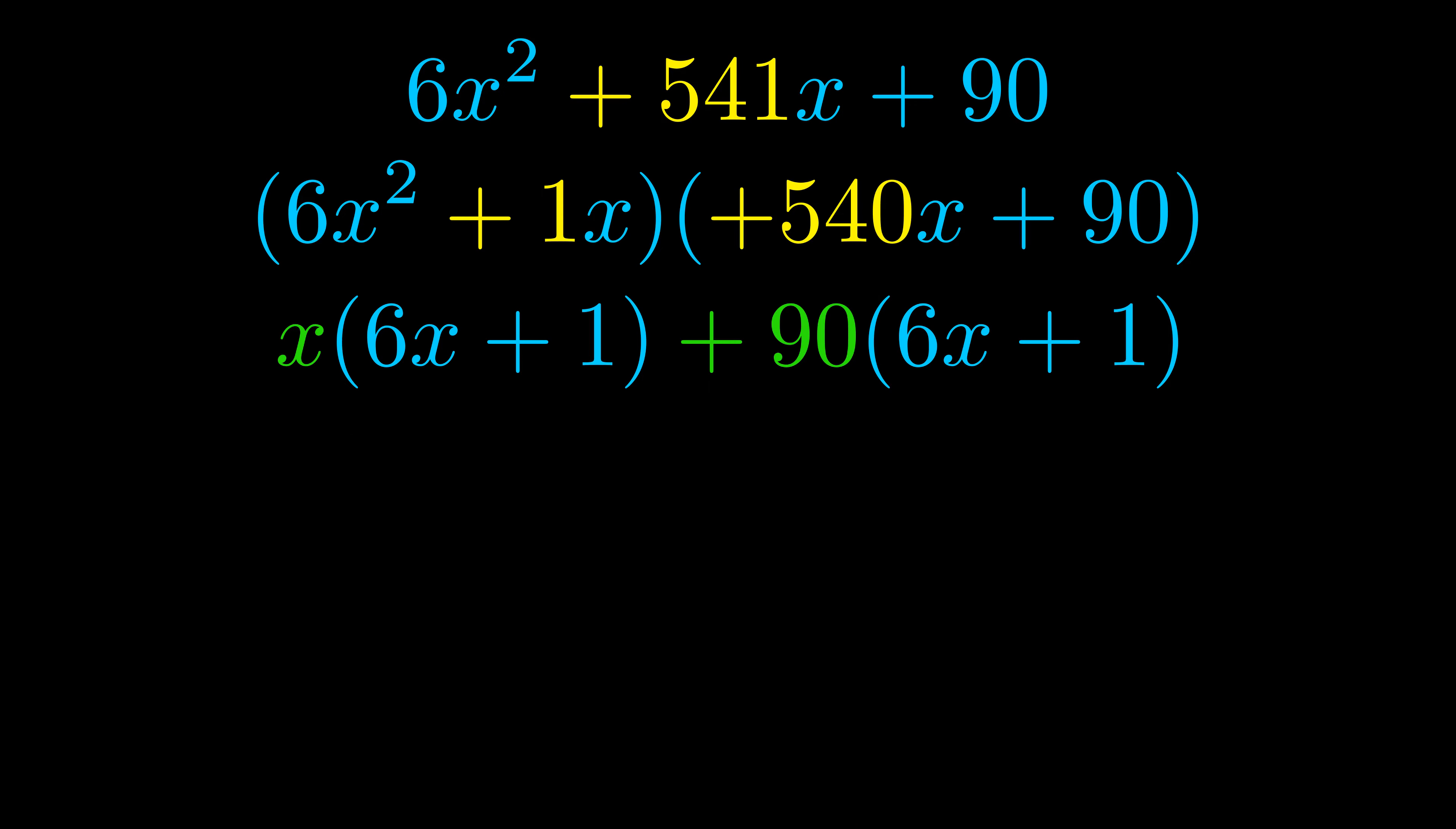Notice also how what remains inside of the parentheses is the same in both cases. The blue values are the same. Those blue values will become one of our factors, and we will combine the two green values, the GCFs that we pulled out, to get the other one.